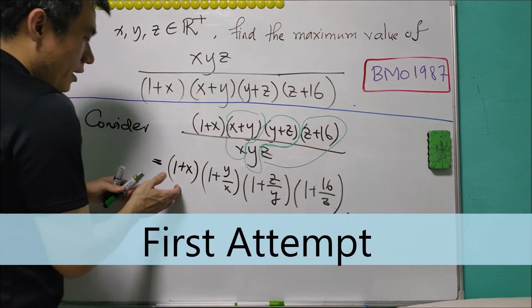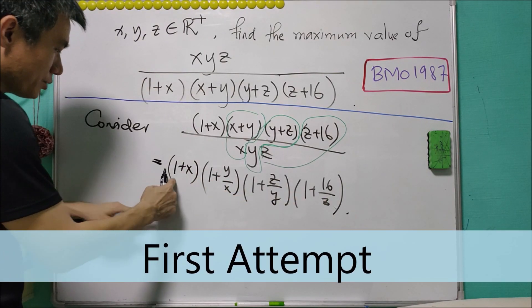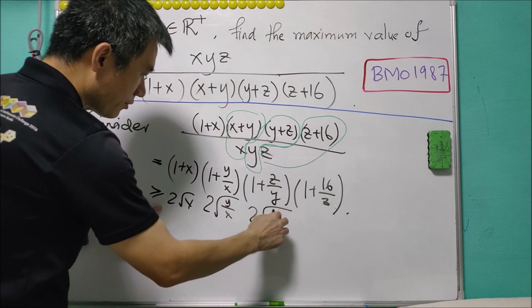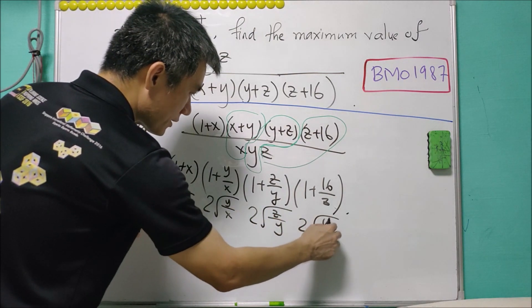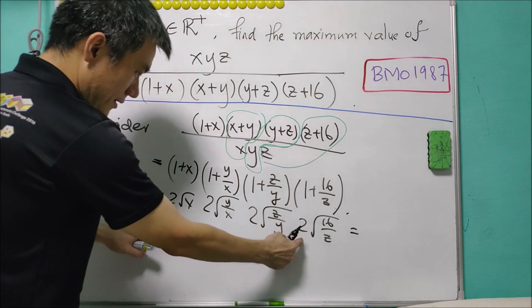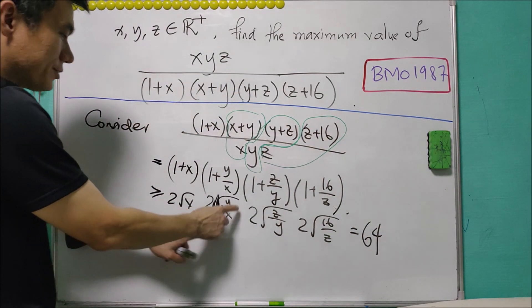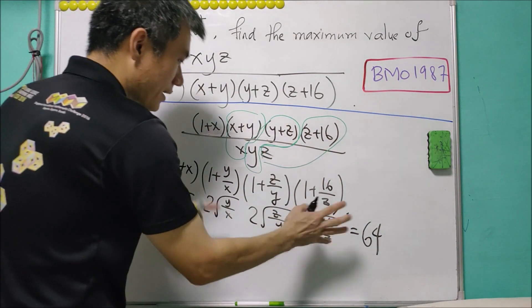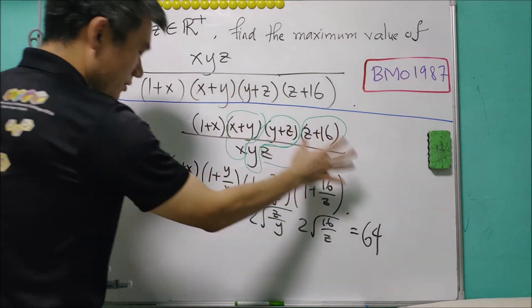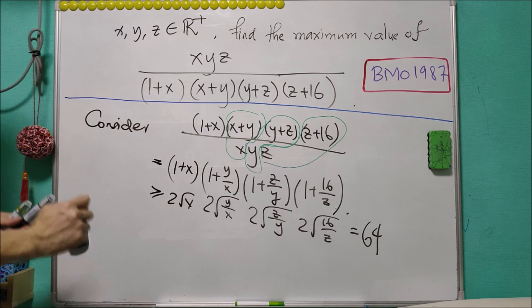It is natural to apply AMGM to each of the terms. Each term satisfies 1 + t ≥ 2√t, so the product is greater than or equal to 2√X · 2√(Y/X) · 2√(Z/Y) · 2√(16/Z), which equals 16 times 4, that is 64. The square roots cancel, giving us this expression is greater than or equal to 64.